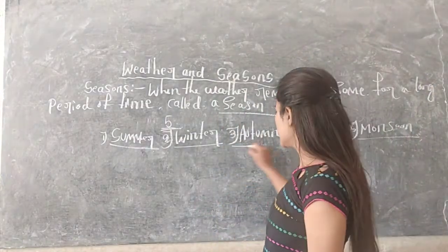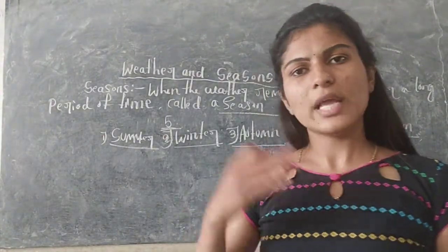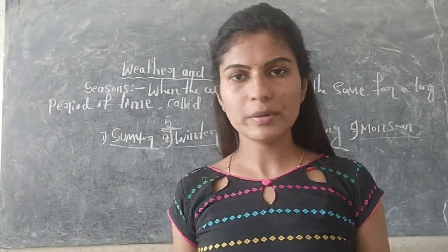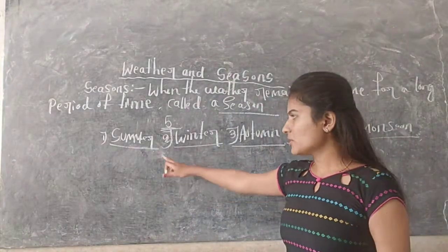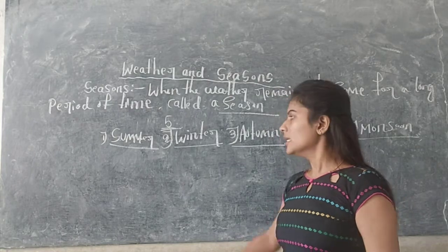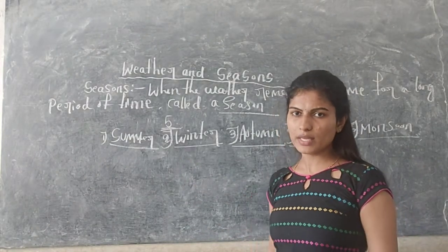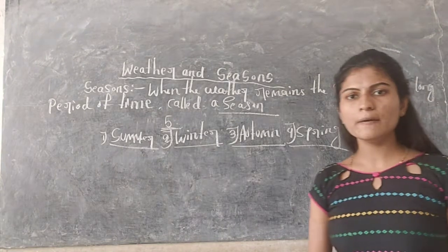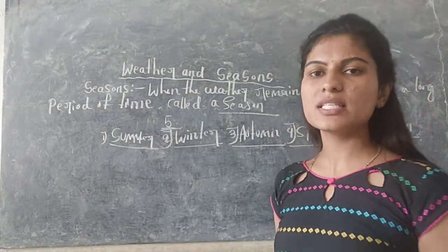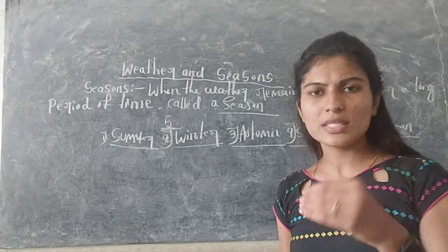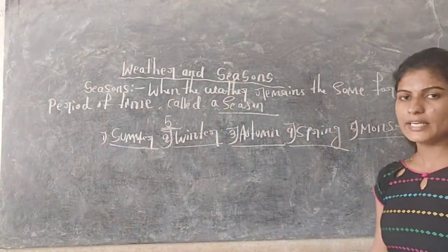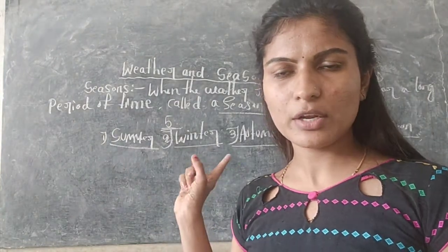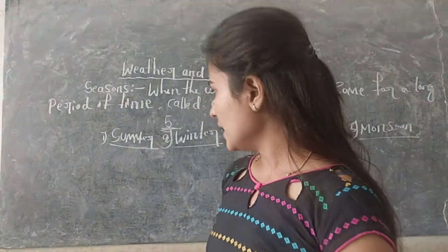Different kinds of seasons have different kinds of features. Summer season is the very hottest season of the year. Winter season is the very coldest season of the year. In the autumn season, trees shed their leaves. In the spring season, trees and plants start blooming. In the monsoon season it rains a lot.